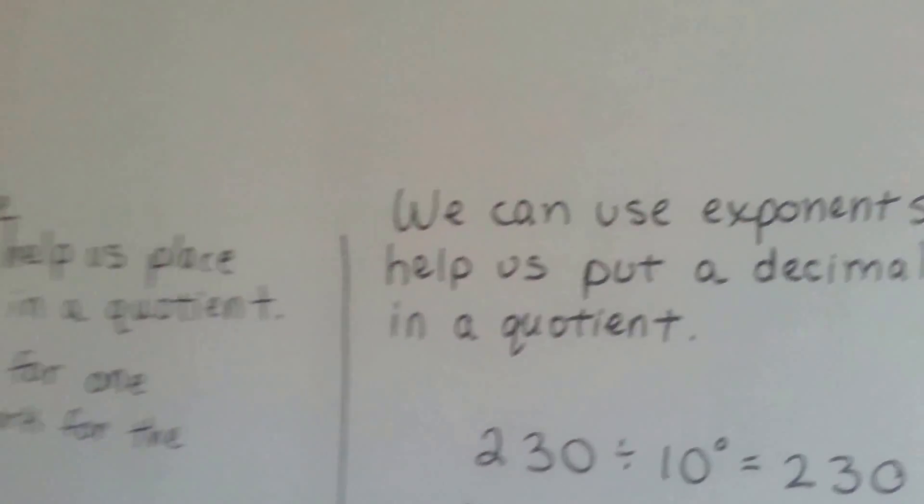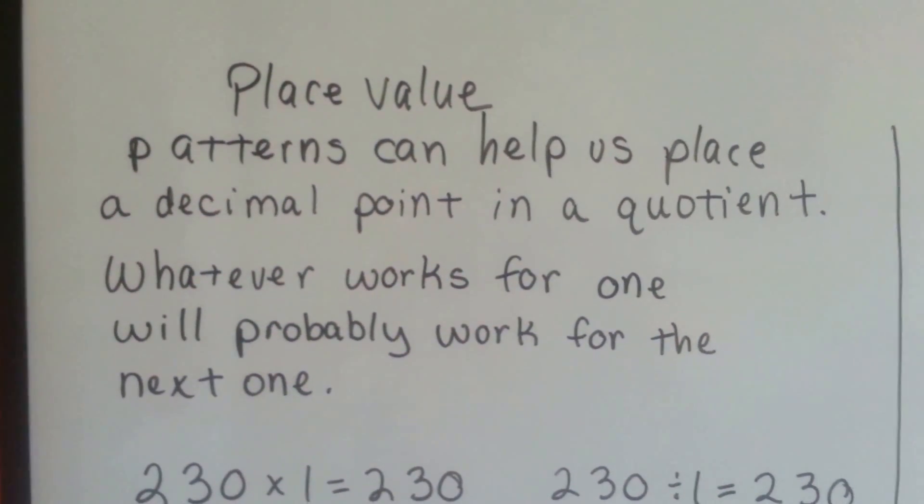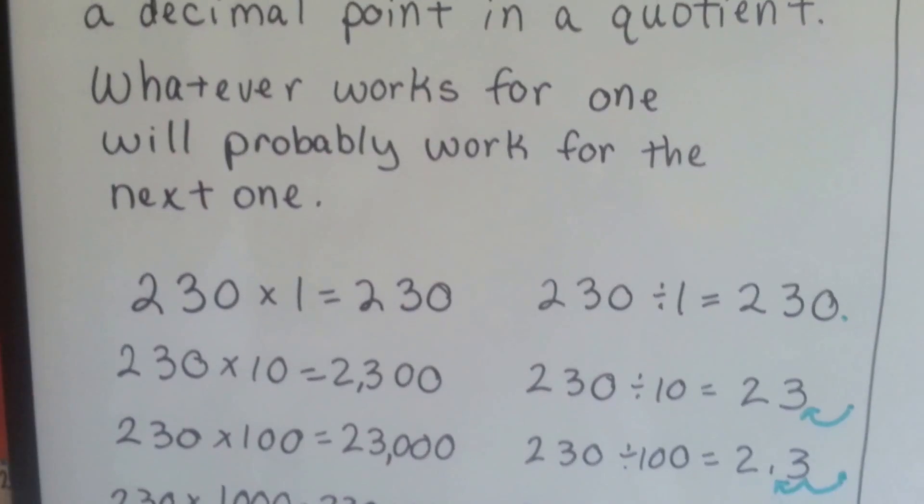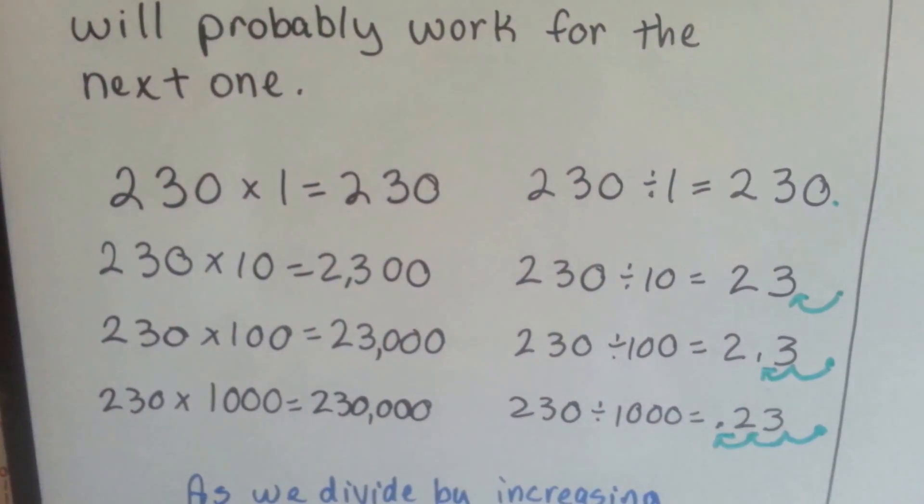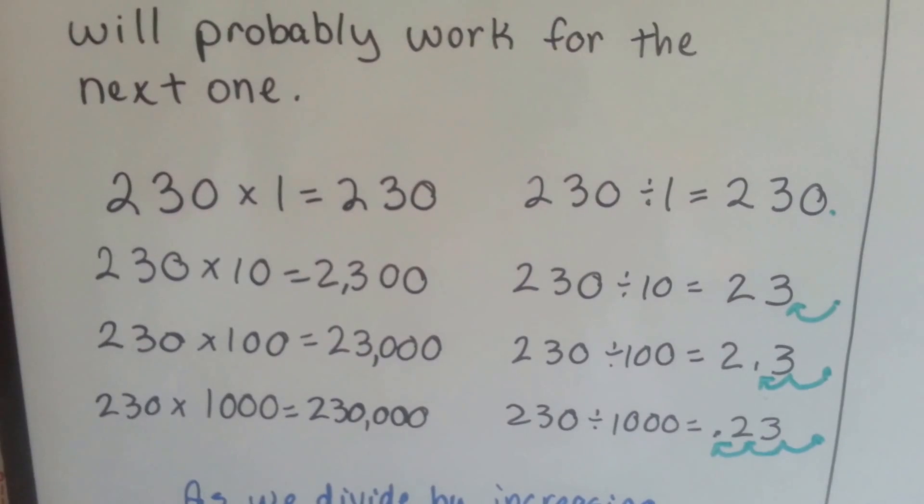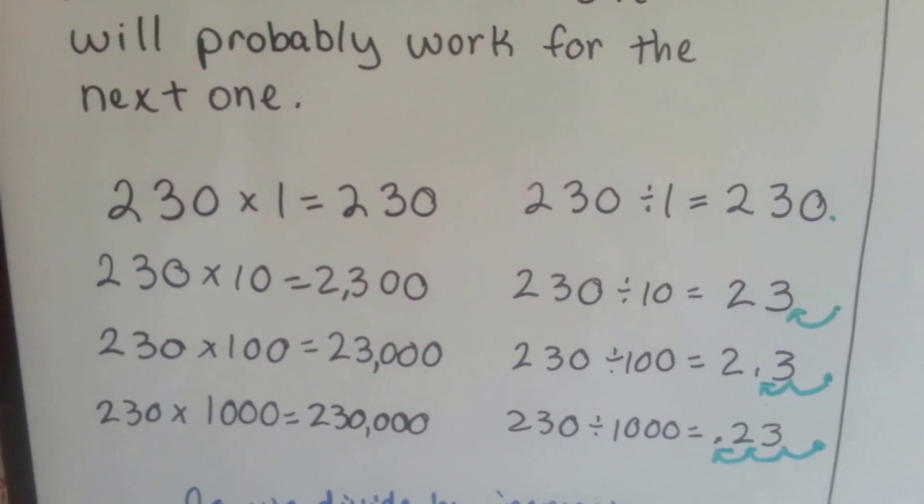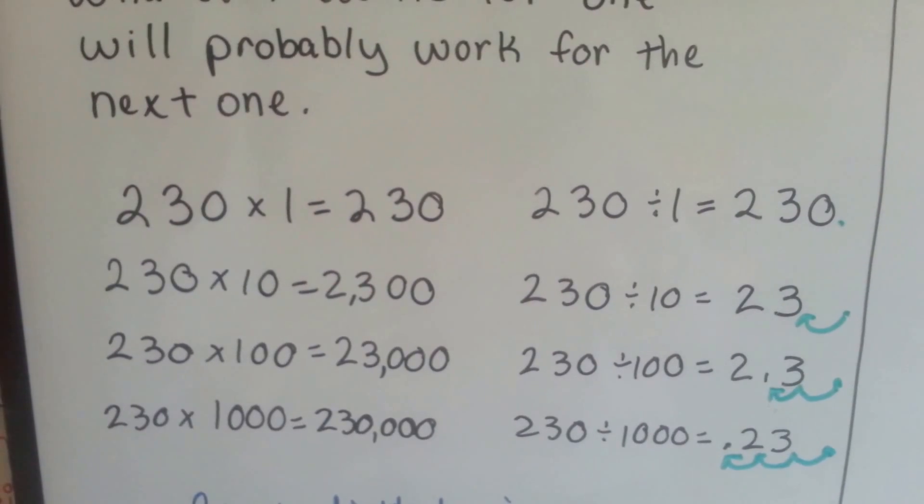So that means that place value patterns can help us place a decimal point in a quotient. Whatever works for 1 will probably work for the next one. So if we take a look at these, we have 230 times 1 is 230. 230 divided by 1 is 230, because it's divided into 1, right?